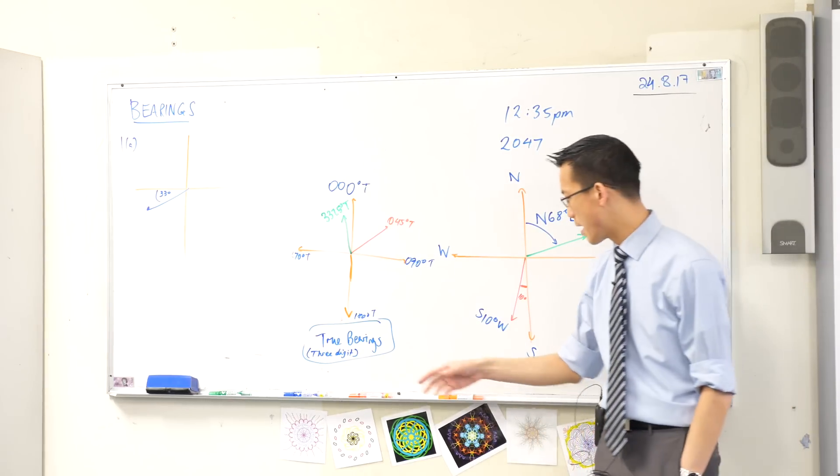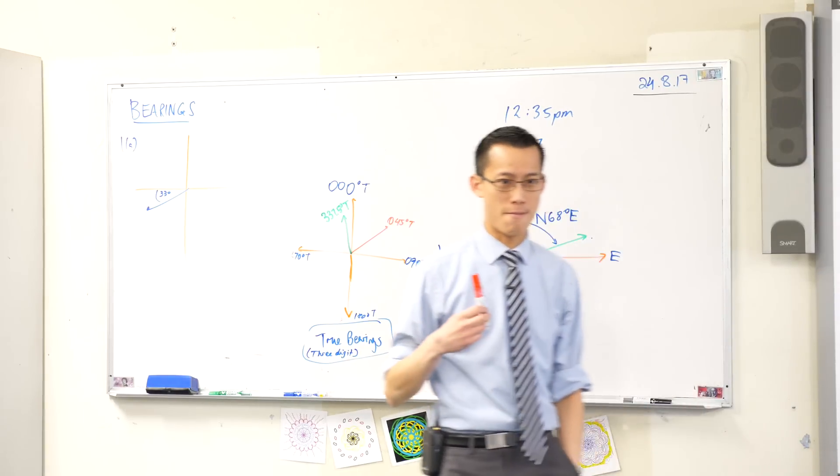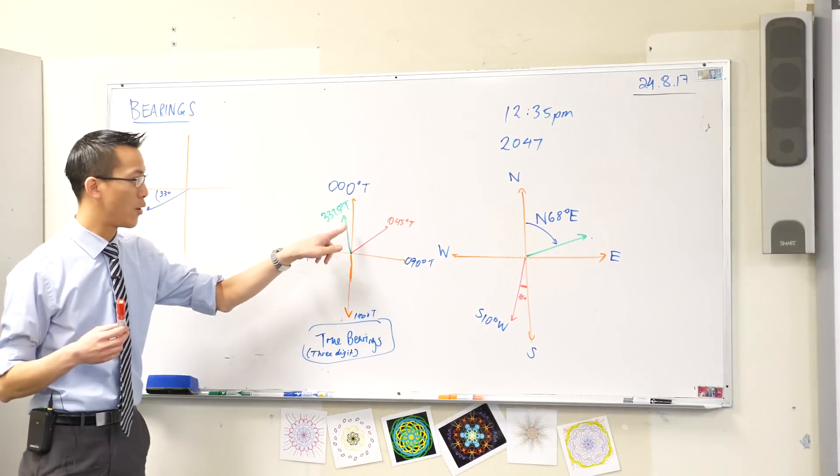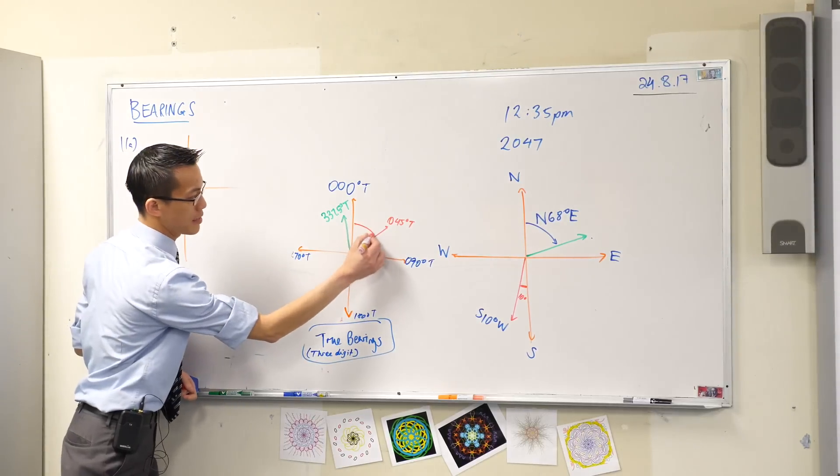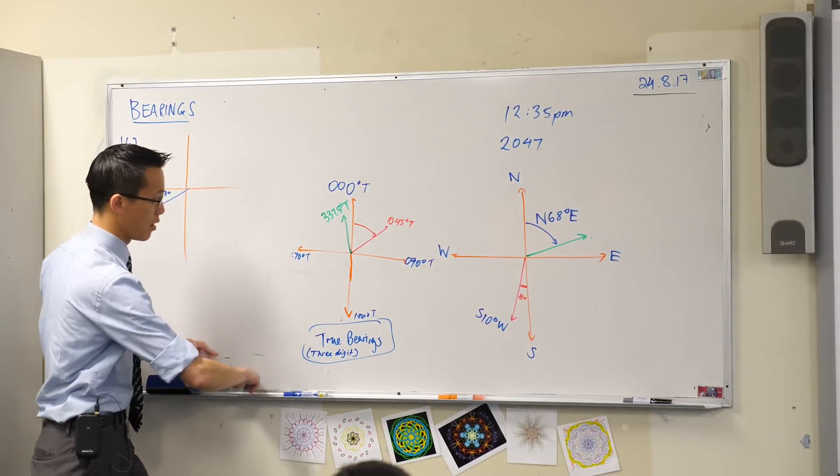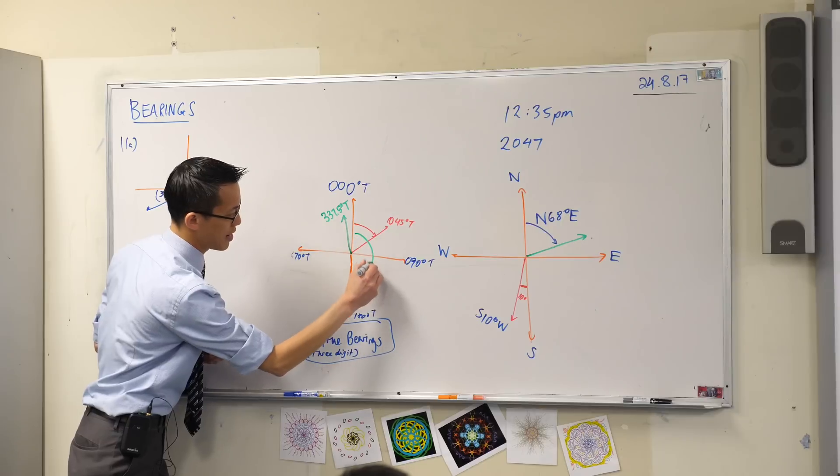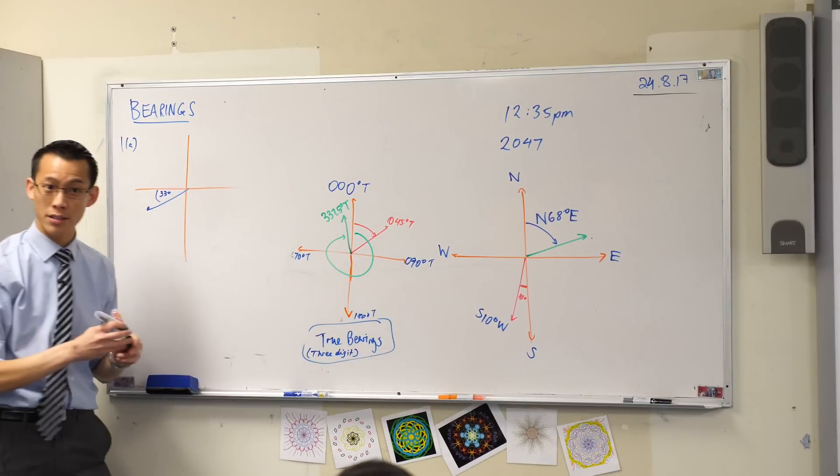When I measure a true bearing, where do I start from? I always start from north. So you can see that's why this angle is here. This angle is really large because it has to go all the way around.